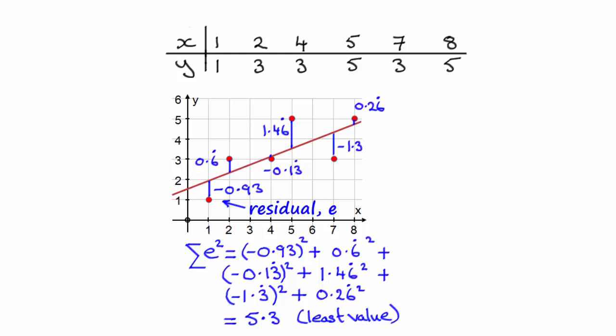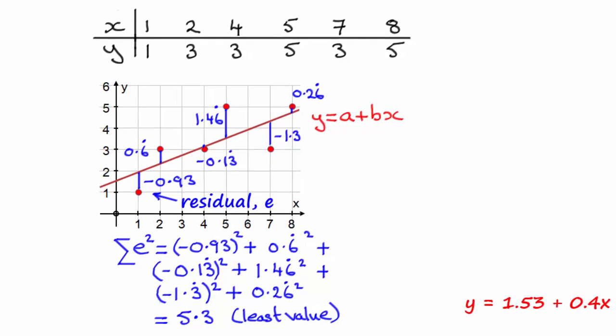Now statisticians use this form for the equation of a line, y equals a plus bx. a is the intercept with the y axis and b is the gradient of the line. And without any proof, I told you that the equation of that line turns out to be y equals 1.53 plus 0.4x.